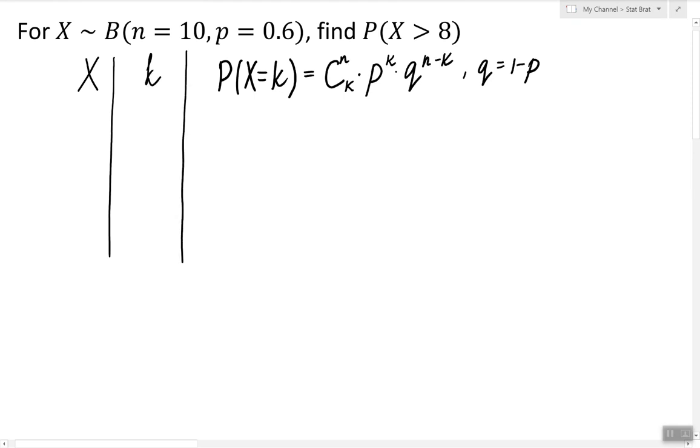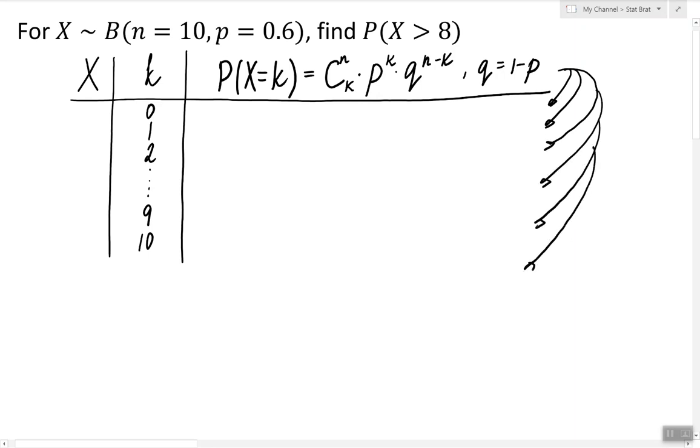So K represents any value, and in this case since the number of trials is 10, K can be as low as 0 and as high as 10 and any number in between. Now we can use this formula above to find the probability of X being equal to 0, probability of X being equal to 1, X being equal to 2, X being equal to 9, and X being equal to 10.